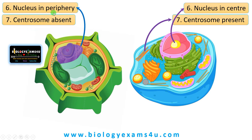The next difference is that centrosome is absent in plant cells whereas centrosome is present in animal cells. Centrosomes are cellular structures that serve as microtubule organizing centers, often made up of two centrioles in animal cells, and are involved in the formation of spindle fibers during cell division. In plant cells, even though centrosome is absent, a microtubule organizing center is present to organize microtubule formation and regulate chromosome movement during cell division.